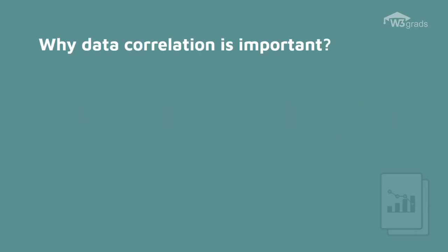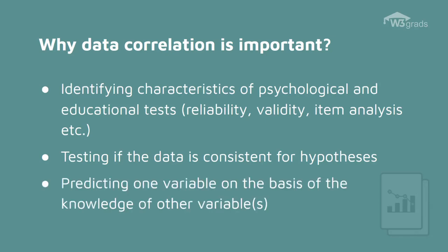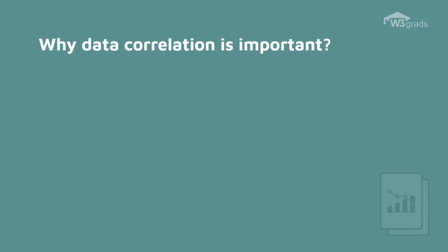Well, data correlation is important for finding the characteristics of psychological and educational tests, which are reliability, validity, item analysis, etc. It is important for examining whether certain data is consistent with a hypothesis or not. Moreover, it is also important for anticipating a variable based on the knowledge of other variables.